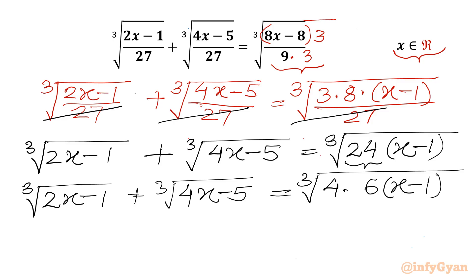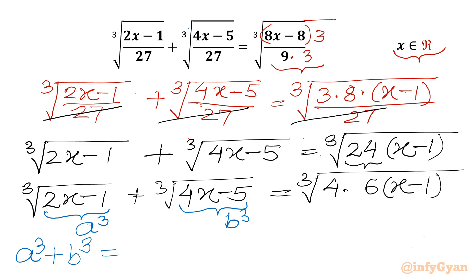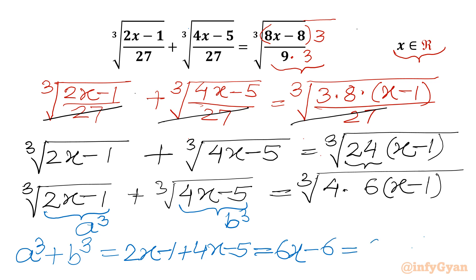Now I will use substitutions. Let us consider the first radicand as a³ and the second radicand as b³. I will find a³ plus b³, which equals (2x − 1) plus (4x − 5). So 2x plus 4x is 6x, minus 1 minus 5 gives 6x − 6. If I take 6 common, we get 6(x − 1). And here we have 6x − 1 available.